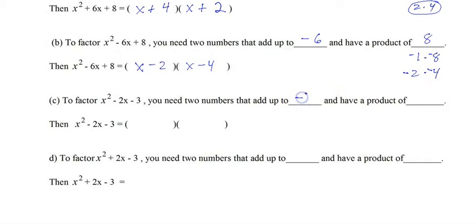So we need two numbers that when added give us negative 2. When multiplied, give us negative 3. So the only type that we have would be 1 and 3. Now, if we put a negative here, when we add them, we'd get a positive 2. So we know it doesn't go there. It has to go there. And then there's our answer, x plus 1, x minus 3.